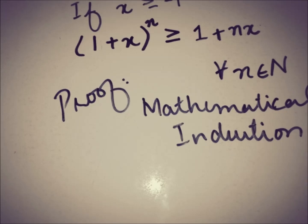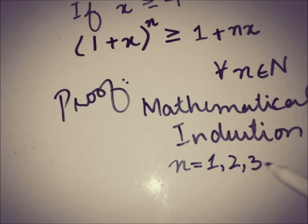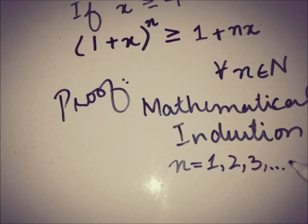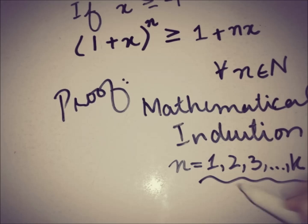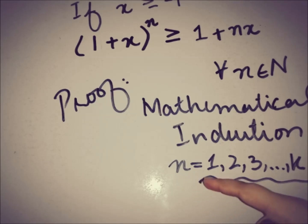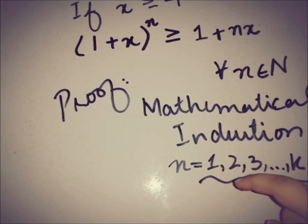The base of the mathematical induction process is that we check the given inequality for some known values of n, that is 1, 2, and 3. If the inequality is true for such finite values of n, then we suppose it is true for some k values. Using the index i or k — for i equal to 1, 2, 3, and so on up to n — we verify the inequality holds.